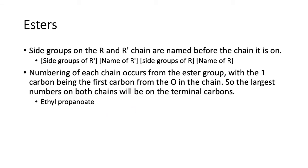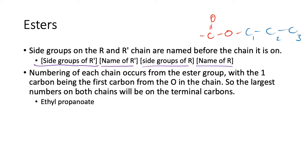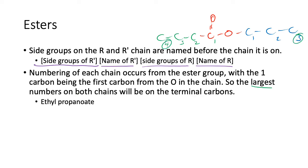Side groups of the R and R' chains are named before the chain they are on. So you'll have: side groups of R', then the name of R', then side groups of R, then the name of R. The numbering of each chain occurs from the ester group, with carbon one being the first carbon from the O in the chain. So on the R' side: one, two, three. On the R side, don't forget that the ester carbon is number one, so: one, two, three, four. The largest numbers on both chains will be on the terminal carbons.